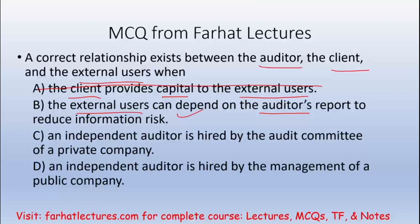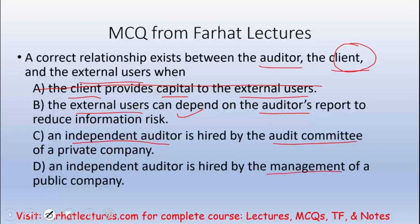Let's go to C: an independent auditor is hired by the audit committee of a private company. Well yes, but that's not the relationship between auditor, client, and external users — this is the relationship between the company's audit committee and the independent auditor. There's no client involved here. Option D: an independent auditor is hired by management of a public company. That is also incorrect — the independent auditor is hired by the audit committee. C is also incorrect because it does not include the client as part of this picture.